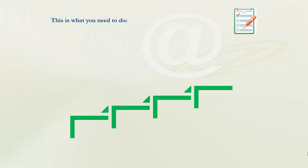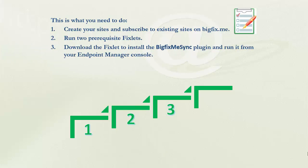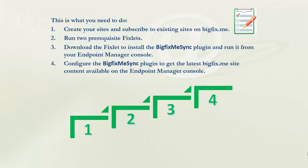This is what you need to do. Create your sites and subscribe to existing sites on BigFixMe. Run two prerequisite fixlets. Download the fixlet to install the BigFixMe Sync plugin and run it from your Endpoint Manager console. Configure the BigFixMe Sync plugin to get the latest BigFixMe site content available on the Endpoint Manager console.